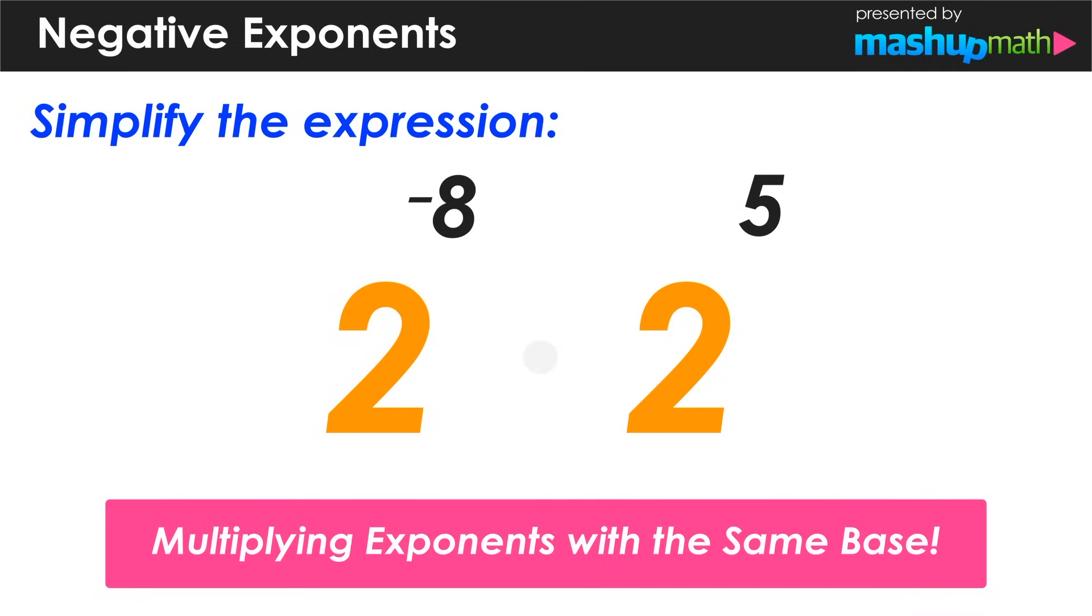Now when we multiply exponents with the same base, we know that there's a rule and that rule is that we can add the exponents together. In this case, negative 8 plus 5 is equal to negative 3. So now we have 2 raised to the negative third power.